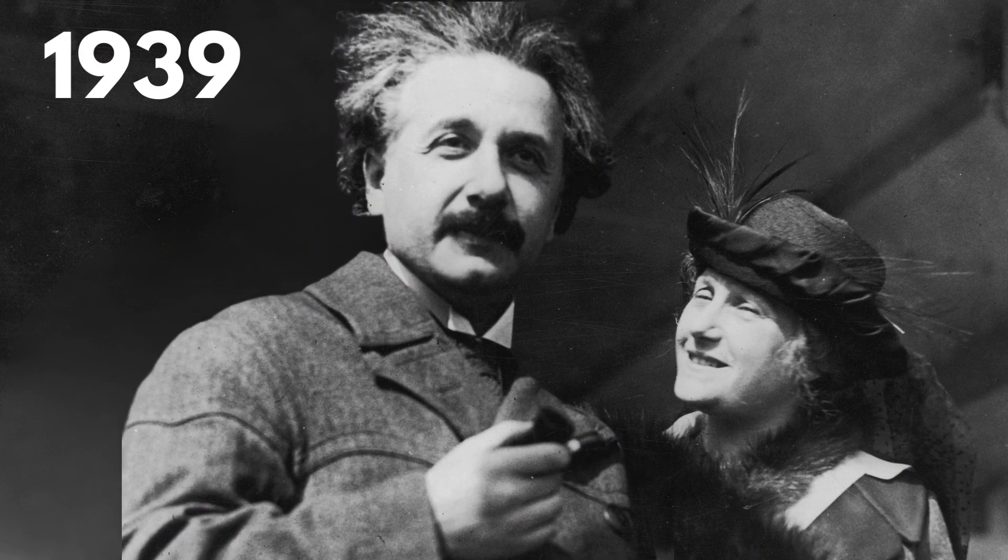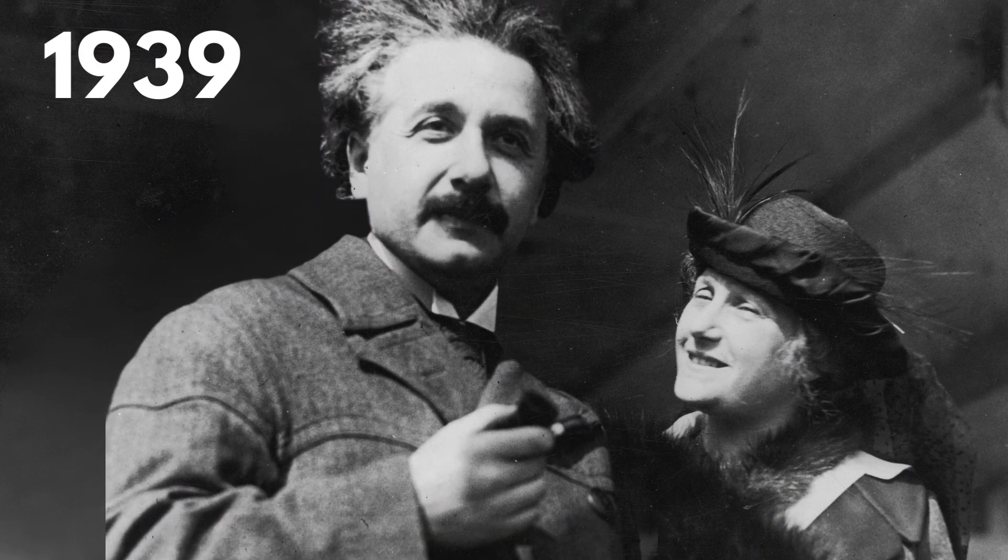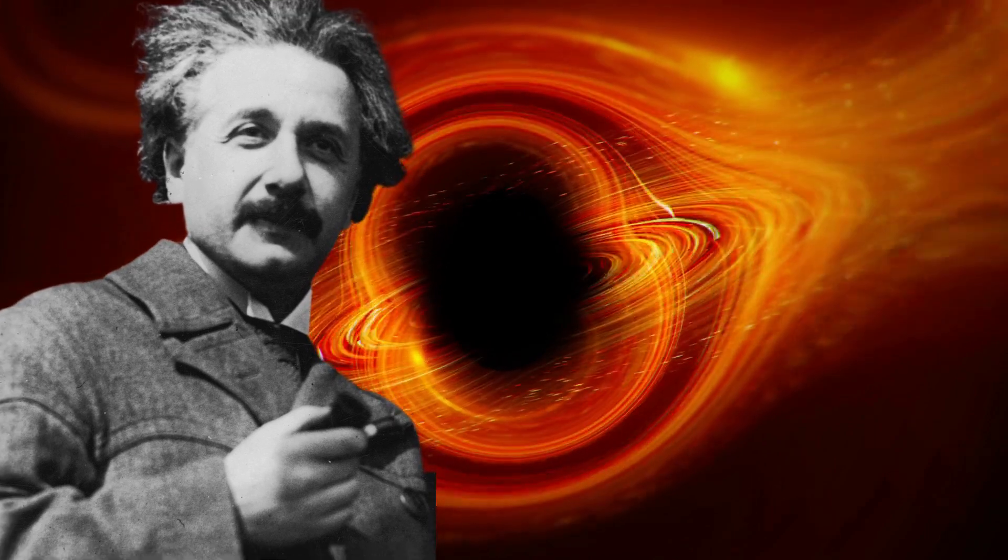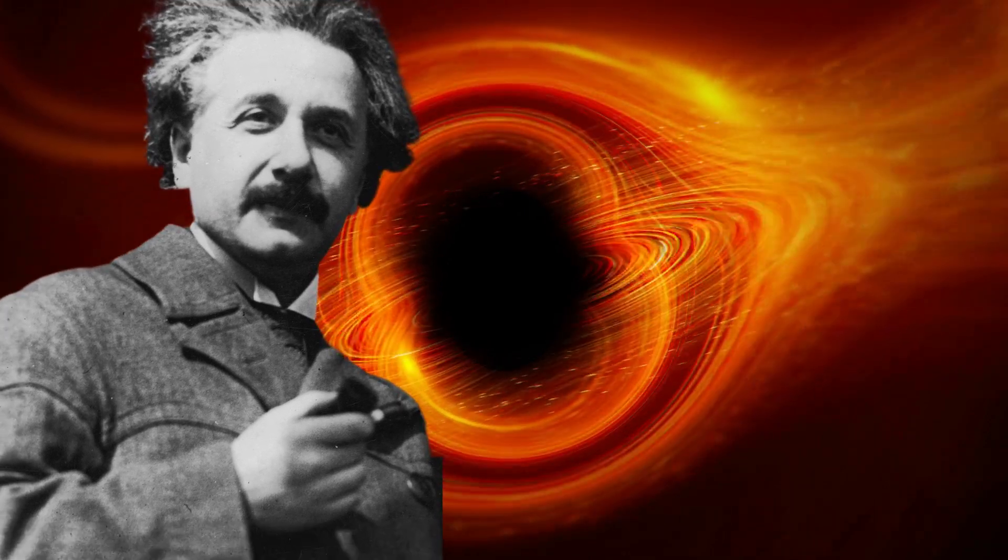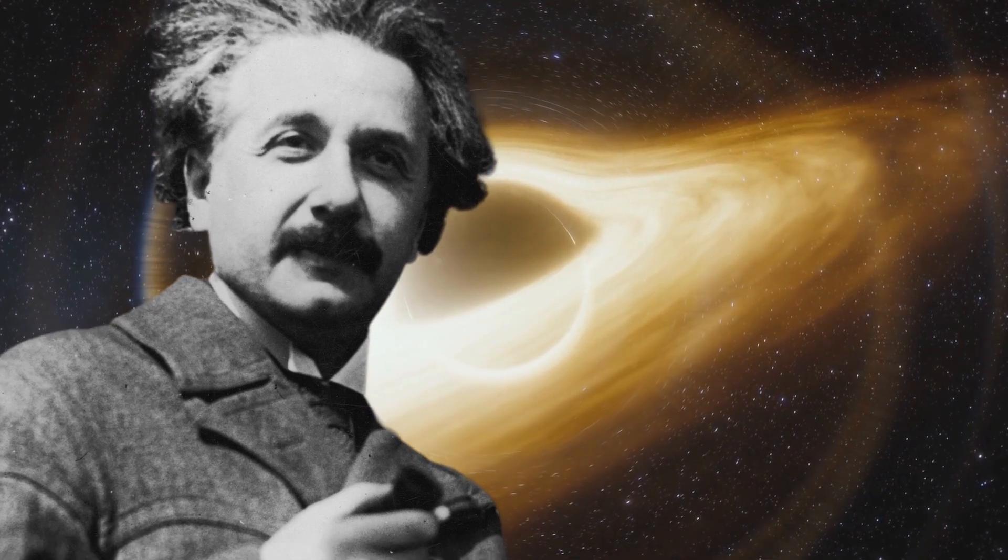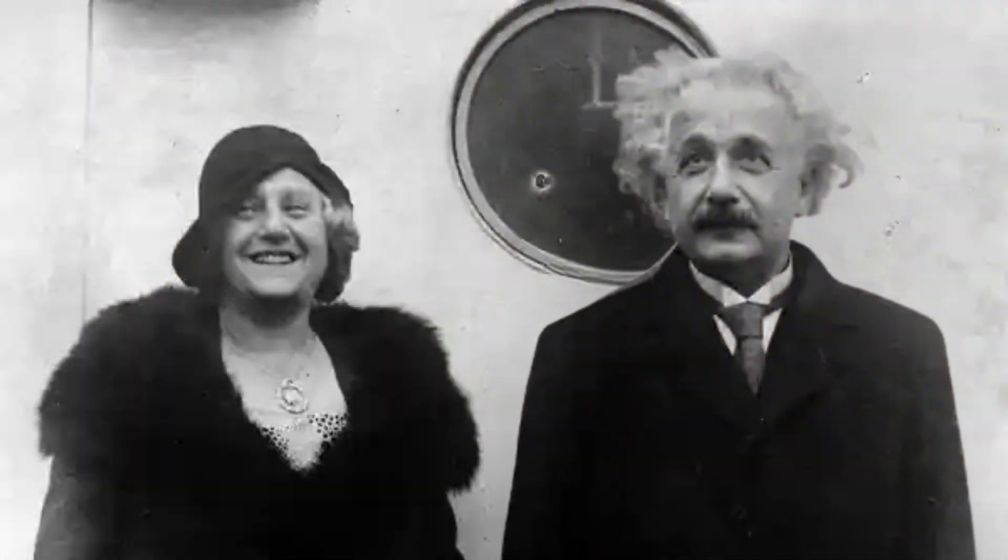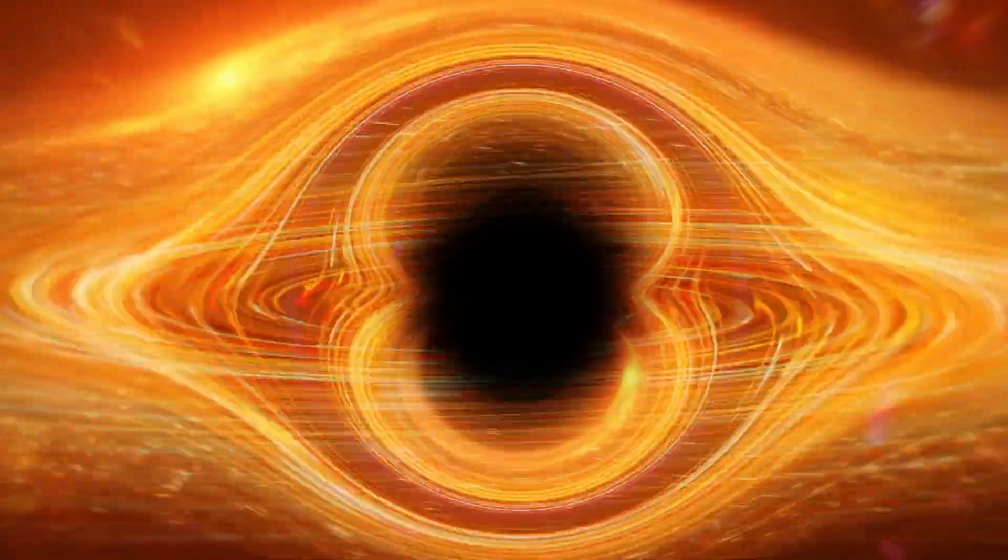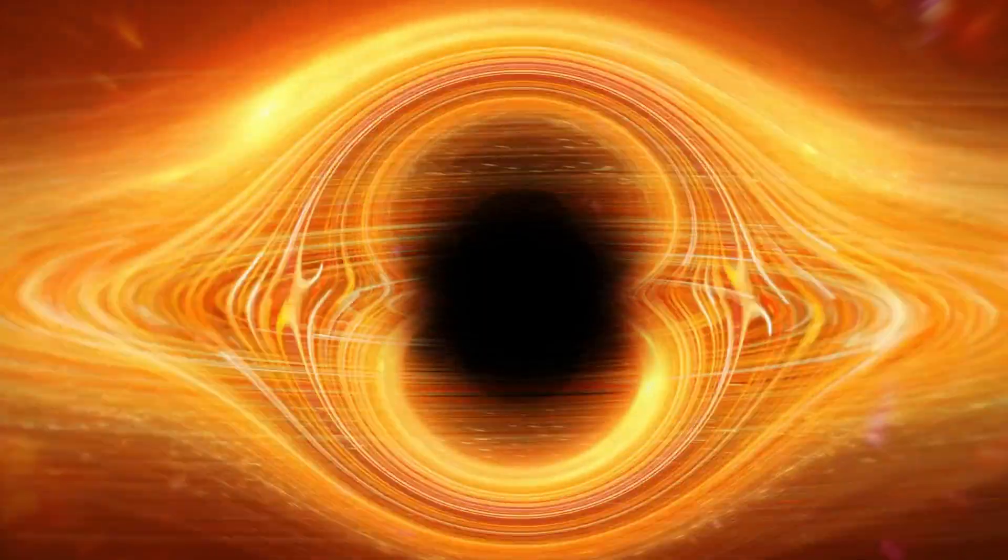In 1939, Einstein made an error in his calculations that led him to reject the idea of existence of black holes, claiming that it was a flawed theory. Despite the fact that other scientists believed in the possibility of black holes, Einstein remained skeptical. It wasn't until the 1960s and 70s when observations of X-ray emissions and the motion of stars in the Milky Way provided compelling evidence for the existence of black holes that Einstein's rejection of the theory was proven wrong. Today, black holes are widely accepted as a key component of our understanding of the universe.